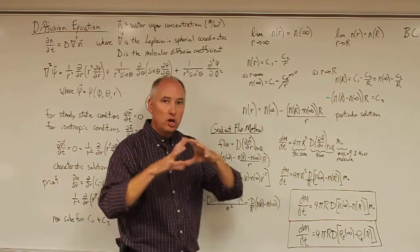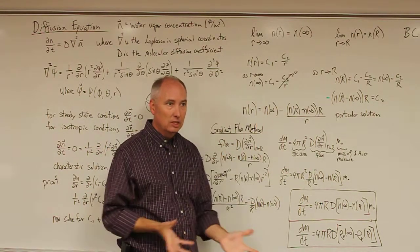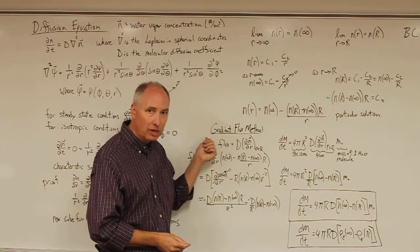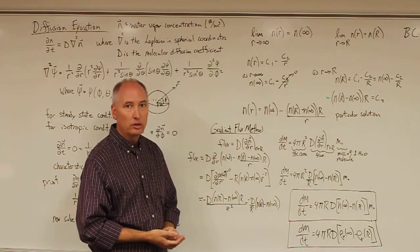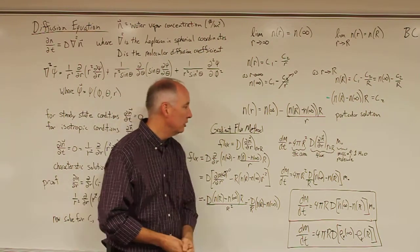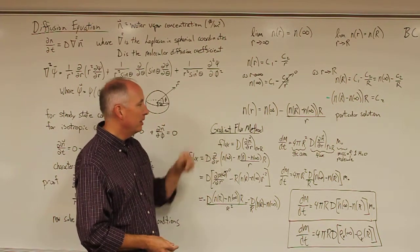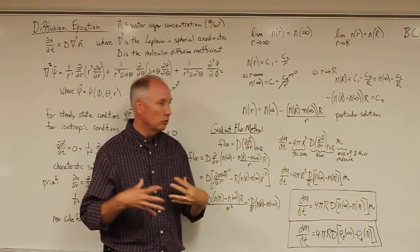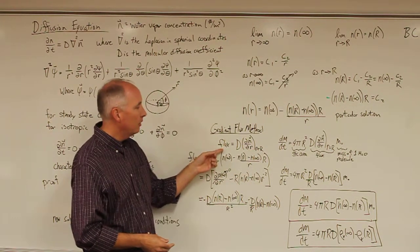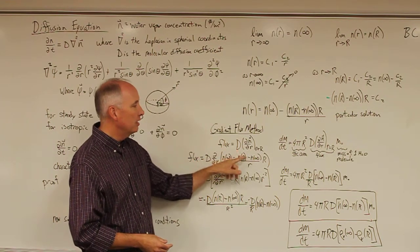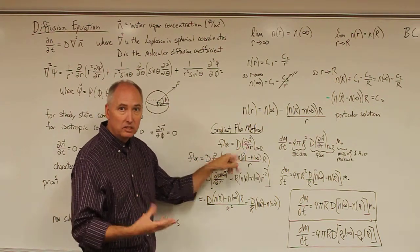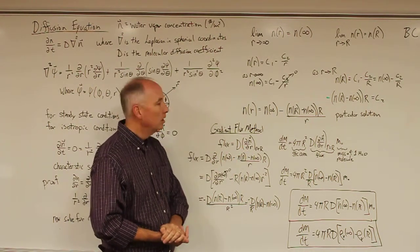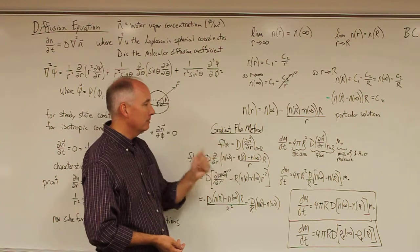Now that we know what the water vapor concentrations look like around our droplet, we can use the gradient flux method to calculate the growth rate of our droplet due to condensation. In the gradient flux method, the flux of water vapor molecules to the surface equals the diffusivity times the gradient (partial n over partial r) of the water vapor concentration.